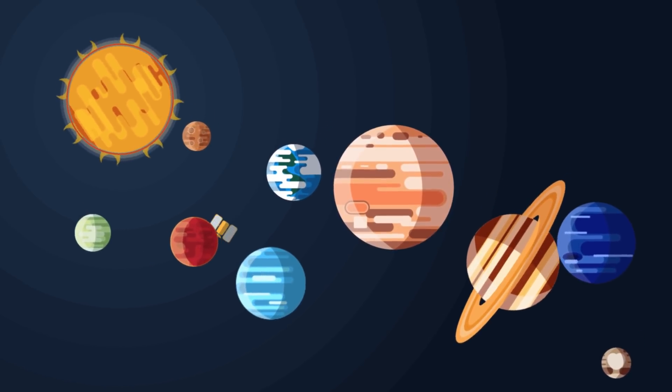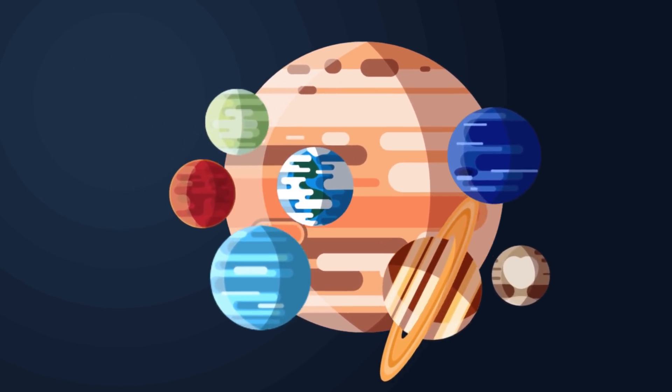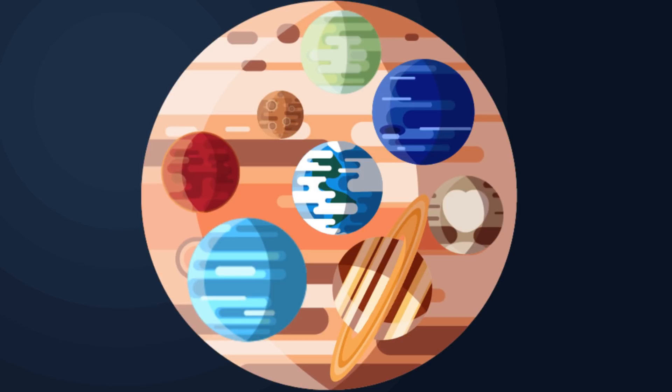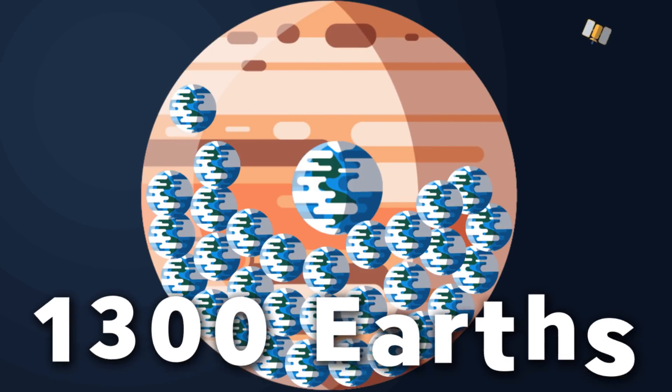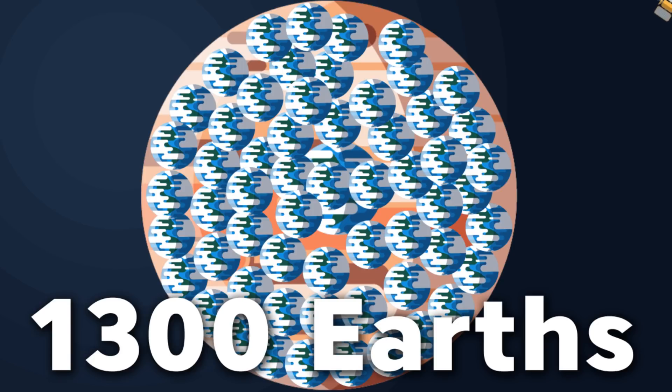Jupiter is the largest planet in the solar system. It's so large that all of the planets in the solar system could fit inside it. If we talk about Earth and Jupiter, 1,300 Earth could fit inside it like a big celestial gumball machine.